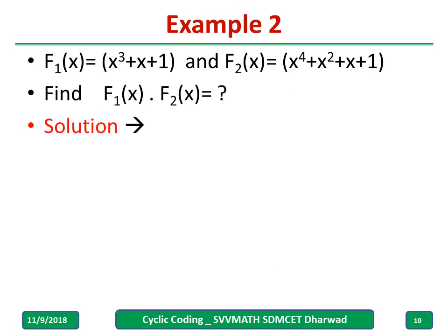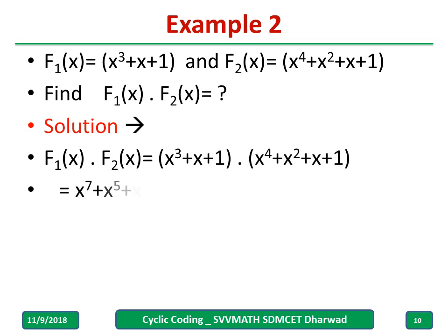I will take another example. Now I have f₁(x), f₂(x), how to multiply these two? Same procedure. Multiply and wherever duplicates comes, for example I have X⁵, X⁵ equals 0, X⁴, X⁴ equals 0, X², X² equals 0. Hence the answer becomes X⁷ plus 1. You can pause, do manually and verify your answer.